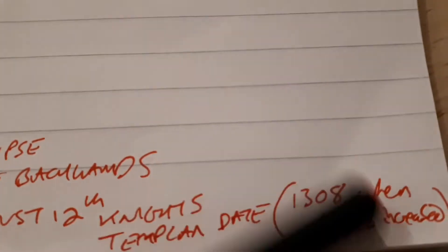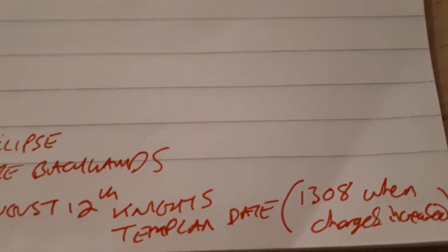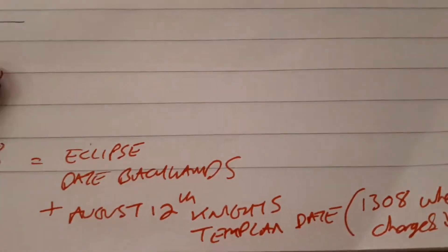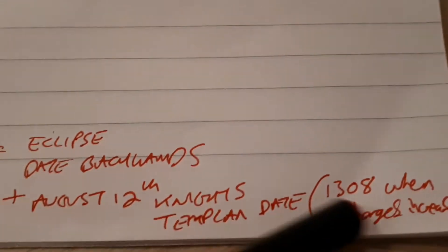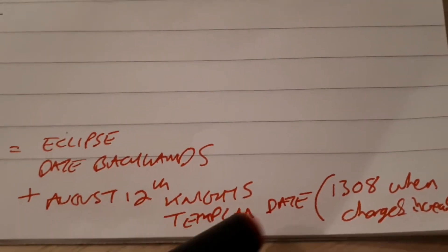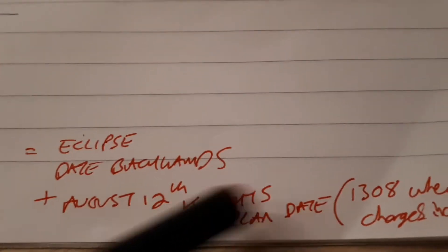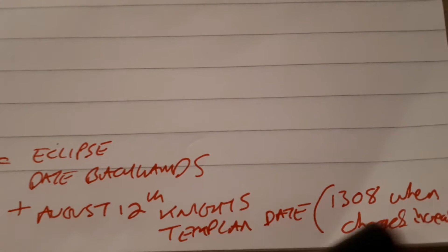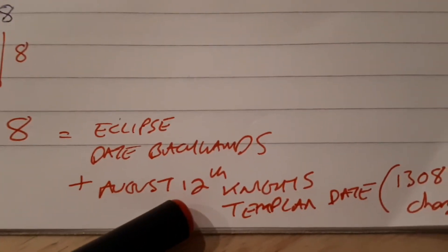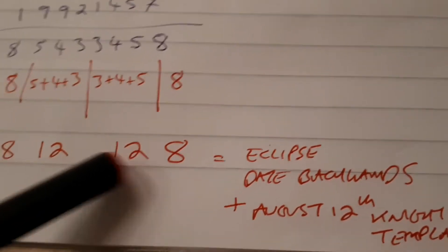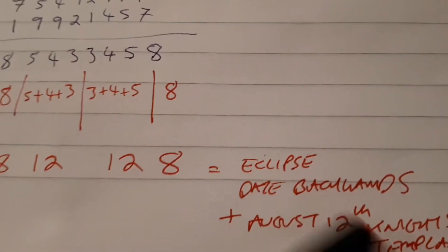It led me to believe it was going to be something on the 13th of August because it was that Any Given Sunday date, but it's all linked. Everything's still linked to this. That date's already gone. Yeah, 1308—it was the 12th of August, the date itself in that year when they increased those charges. That's why we keep seeing that as well, and it's the eclipse date backwards.